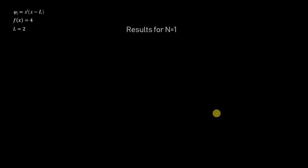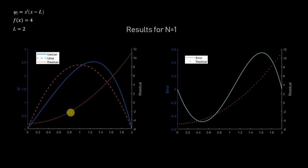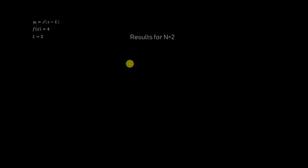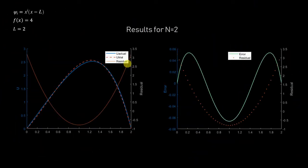For n equals 1, the shape is almost the same but the error is pretty large. Note that f(x) equals x^4 is used here, on a domain from 0 to 2. For n equals 2 we are approaching closer and closer to the exact solution.